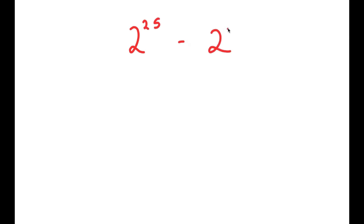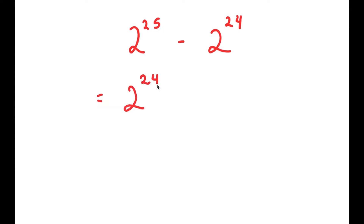In this video I'm going to solve the problem 2 to the power of 25 minus 2 to the power of 24. To solve this, I'm going to start by rewriting 2 to the power of 25 as 2 to the power of 24 plus 1, minus 2 to the power of 24.